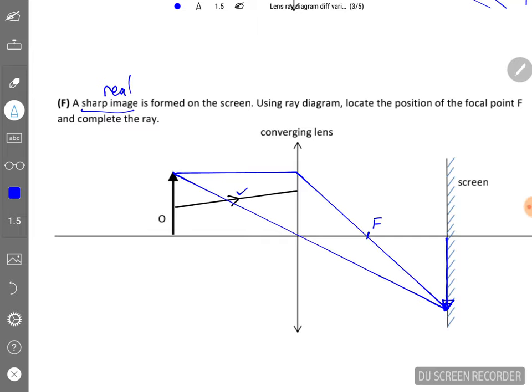Now, one careless mistake by student is to connect this point of the ray to the tip of the arrow which is wrong. Remember, I said before, these two rays come from the tip of the object.